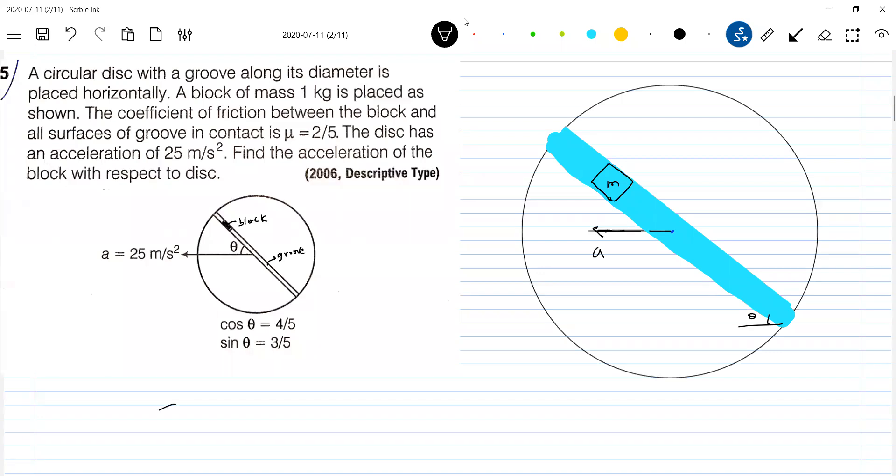Still not understanding. How mg will act? This is a disk placed on the horizontal surface, and this is a groove, and this is a block. It is moved with an acceleration. It is placed on the horizontal surface, so don't think that mg will act vertically down. Mg will act into the plane of the diagram. You should be able to understand, placed urgently.